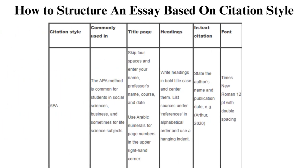How to structure an essay based on citation style. While the introduction, body, and conclusion format is common throughout all essays, an essay structure can also be determined by the citation style used. A citation style refers to guidelines on how to format a paper and cite references used. It impacts the spacing, title page, citations, headers, and page numbers, so it is important to understand how to change your structure depending on the citation style required. The APA method is common for students in social sciences, business, and sometimes for life science subjects.